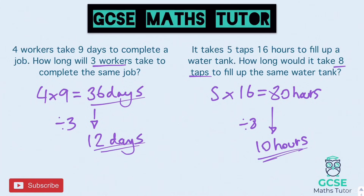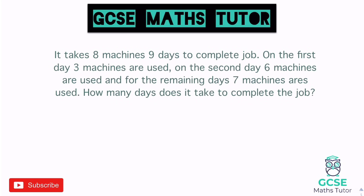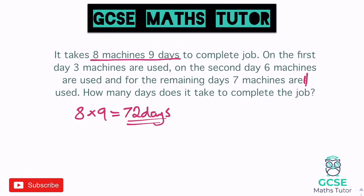Now let's look at some slightly different questions with more words. It takes eight machines nine days to complete a job. On the first day three machines are used, on the second day six machines are used, and for the remaining days seven machines are used. How many days does it take to complete the job? First: eight times nine gives us 72 days for one machine. On the first day, three machines are used — that's three days' worth of work done in one actual day.